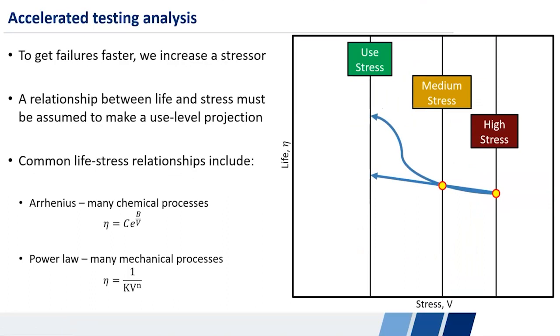And so if we take that intake manifold as an example, there's an additional complication that comes with that. The manifold is intended to last for many, many years. And realistically, we have at best, maybe two years for our entire design cycle, and even much less than that, in which we can feasibly test that particular component. So we need to get failures much faster than would really happen in the field. And this is where accelerated testing comes in. We increase some stressor in order to get failures faster.